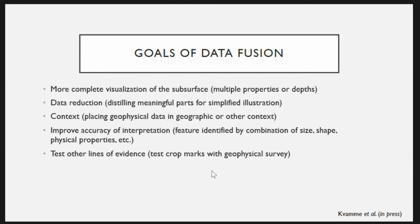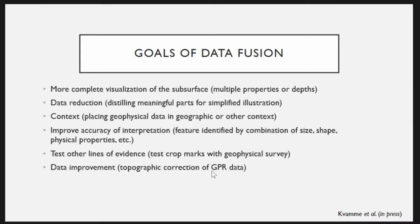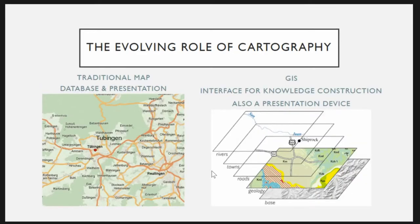Another goal is testing other lines of evidence — verifying one data set by collecting another to see if you have some redundancy. And finally, improving your data itself. An example would be a topographic correction of ground penetrating radar data, where you integrate topographic information into that data to improve its accuracy and quality.